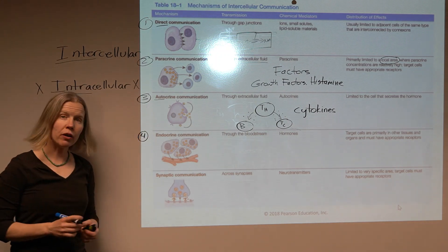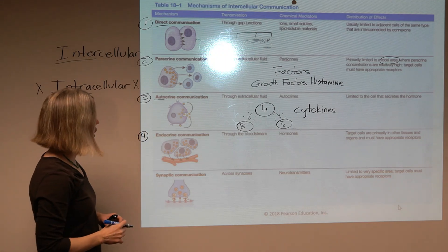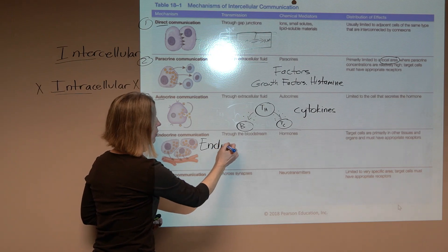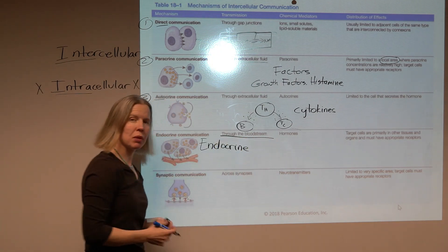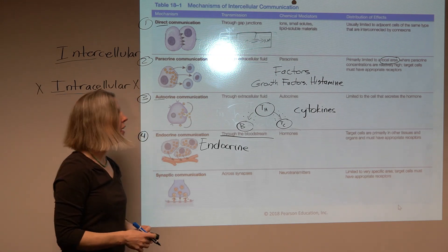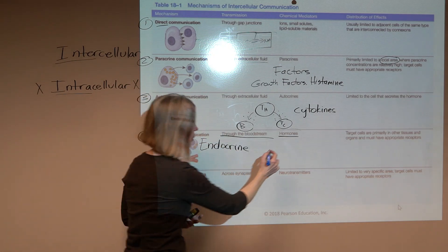Our fourth type of communication is the main topic of our chapter here. So endocrine communication. This takes place via the bloodstream. That is a key thing to keep in mind. So we're going to use these chemical messengers called hormones.